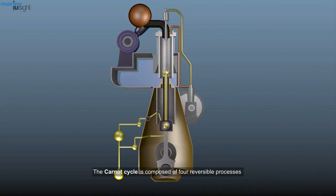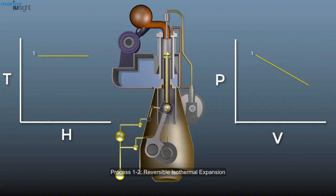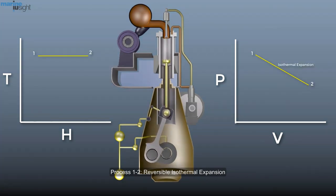The Carnot cycle is composed of four reversible processes. Process 1-2: Reversible isothermal expansion. Th is constant. During this process, heat is absorbed and gas expands reversibly at the constant temperature Th.